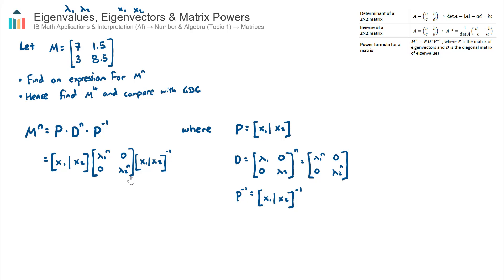In order to find the matrix M for a given power of n, I need to find the two eigenvalues and the two eigenvectors. Let's go ahead and find the eigenvalues first.